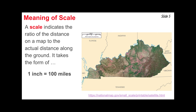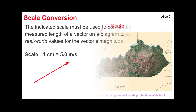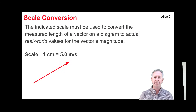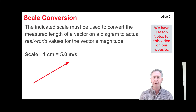You might be accustomed to the concept of a scale from maps. A scale indicates the ratio of the distance on the map to the actual distance along the ground — for example, 1 inch equals 100 miles, where the inch represents the distance on the map and 100 miles represents the actual distance. When we have a scaled vector diagram in physics, we use the scale to convert the measured length of the vector to real-world values for the magnitude.